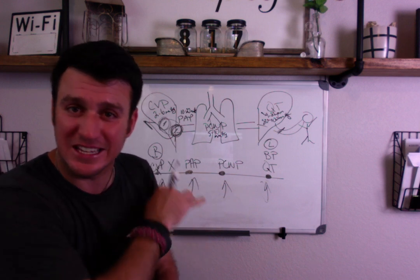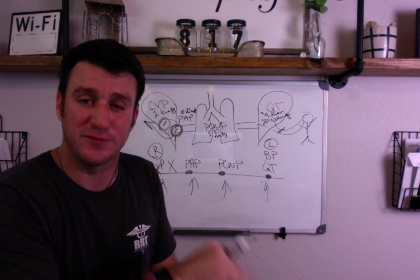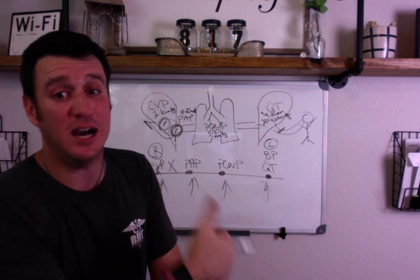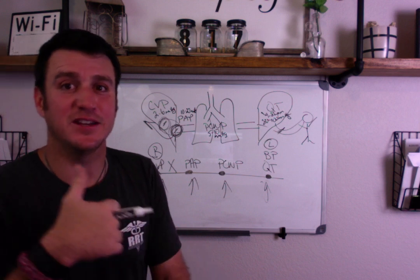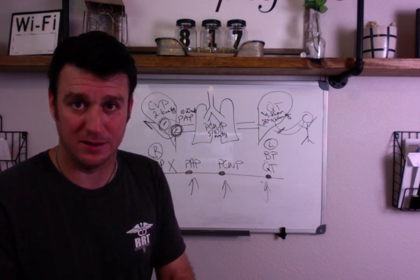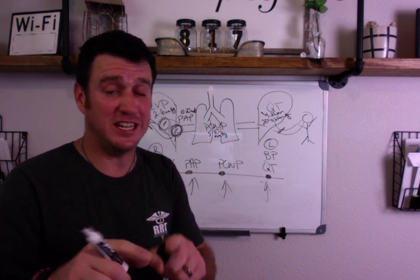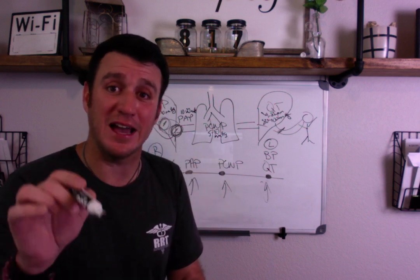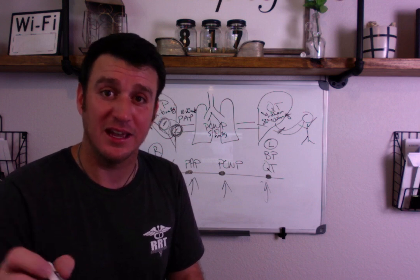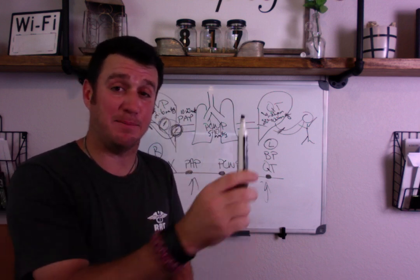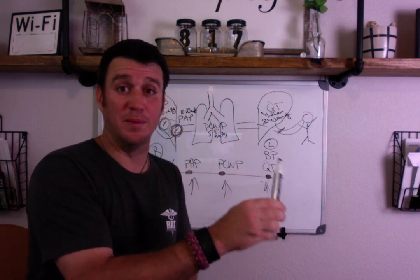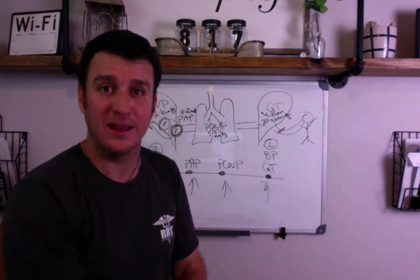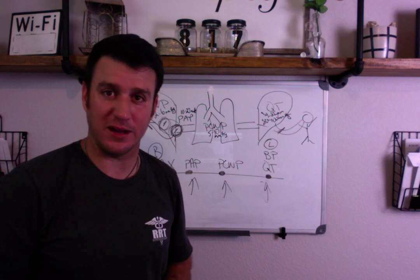So if everything is down, you've lost fluid and you're hypovolemic. If everything is up, you're hypervolemic. When you start seeing mixed changes — this is low but this is high — you have to find where the problem is. Everything behind that point will be high; everything after that point will be low, and you should be able to figure out the answer.